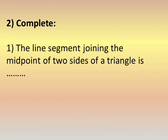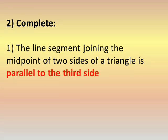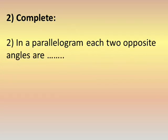Complete section, number one: the line segment joining the midpoints of two sides of a triangle — from midpoint to midpoint — is a line segment parallel to the third side. Number two: in a parallelogram, each two opposite angles are equal in measure.